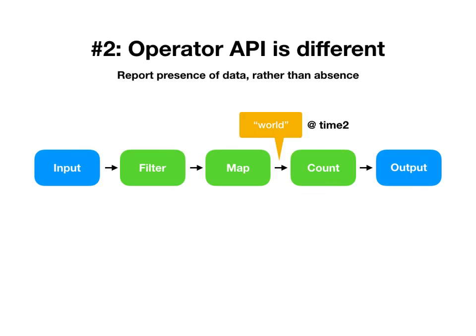Timely dataflow is going to do something a little bit different. Rather than reporting on the absence of data, it's going to report on the presence of data — which sounds odd, but let me explain. Imagine the input operator says 'I may have data at time two.' This is analogous to saying 'I'm not yet done at time two,' but it makes a positive statement about data being present. The worker that has this information can now look down its dataflow operators and tell filter, map, count, and output about the times they may yet see.